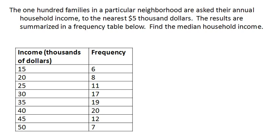So here again is our income data from 100 families. We have income and frequencies here, so we're working off of a frequency table. So we have here 100 pieces of data. So that's even.